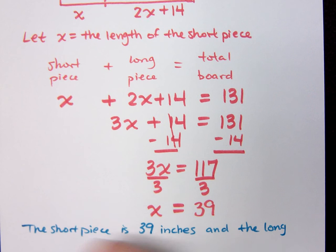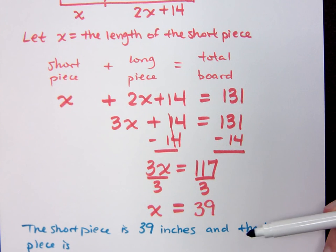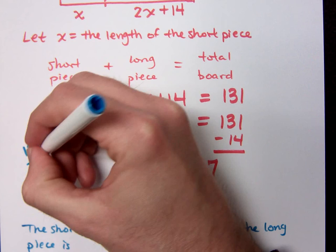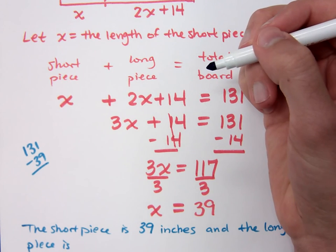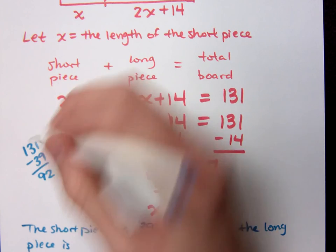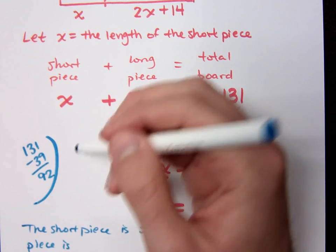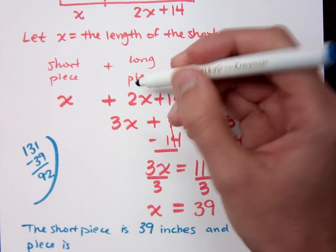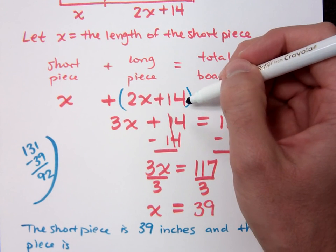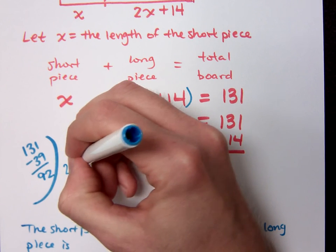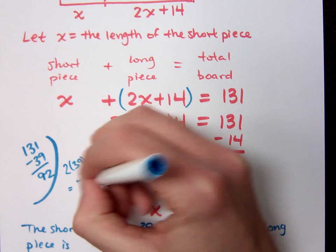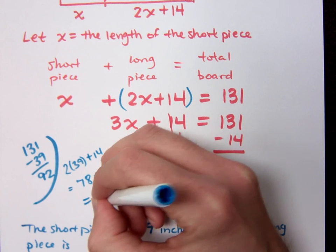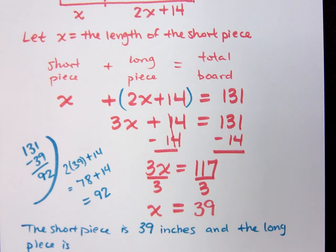And the long piece is, now, what you said, Boris, you said subtract 39 from the 131, right? Yeah. We can do that, but if we do 131 minus 39, what do you get? You get 92. Now, that should be the same as me plugging it in up here, where I have this long piece designated to be 2x plus 14, right? So if I do 2 times 39 plus 14, that's 78 plus 14, and I still get 92, right?